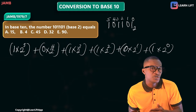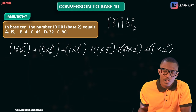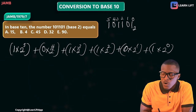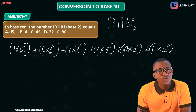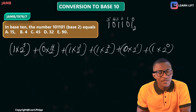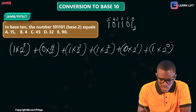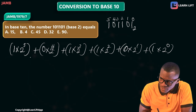Now let's compute each term. 1 times 2 raised to power 5: that gives us 32.